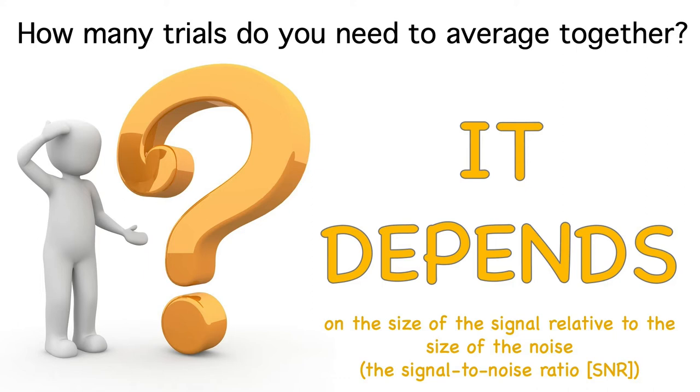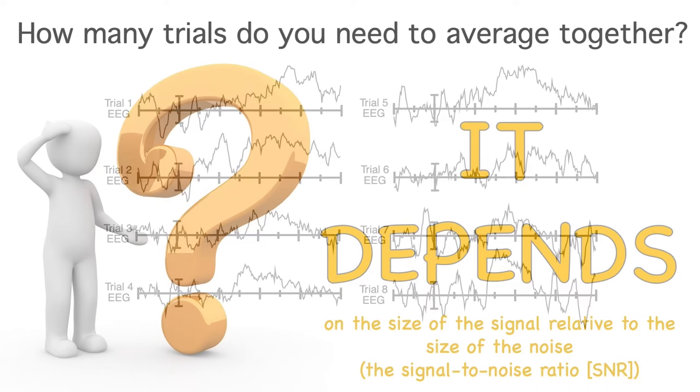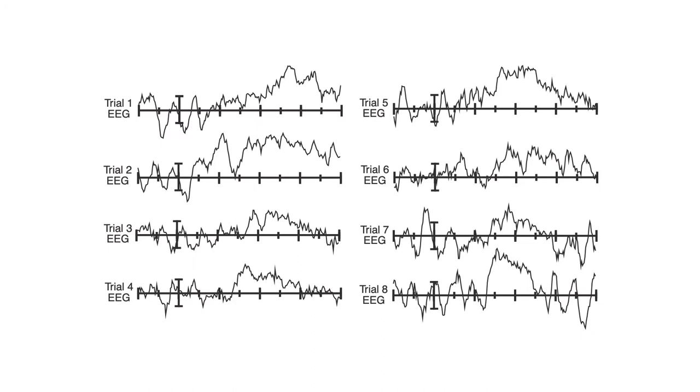Depending on the experiment, we might need 10 trials or we might need 1,000 trials to get an acceptable signal-to-noise ratio. Here's an example where we have only 8 trials, which isn't even close to enough in most experiments.